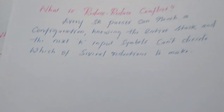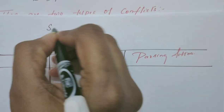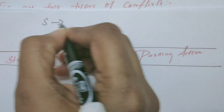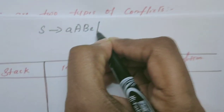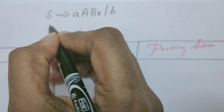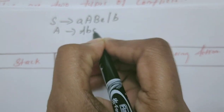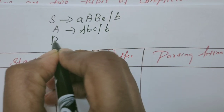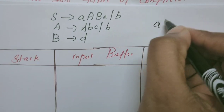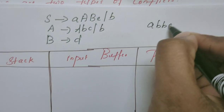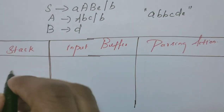Now let us consider the same grammar with a little modification. S derives A, A, B, E, R, B. A derives A, B, C, R, B. B derives D. Let us try to derive the same string A, B, B, C, D. Initially, the stack is empty and the input buffer contains the string A, B, B, C, D, E, with dollar at the end.